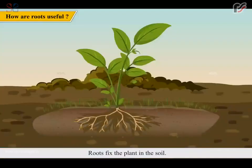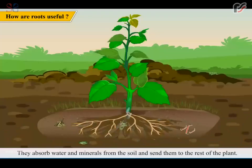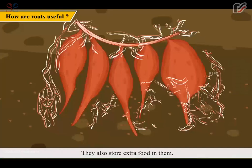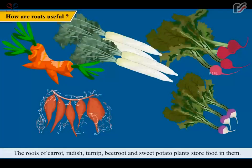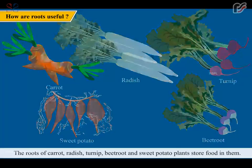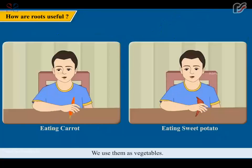Roots fix the plant in the soil. They absorb water and minerals from the soil and send them to the rest of the plant. They also store extra food in them. The roots of carrot, radish, turnip, beetroot and sweet potato plants store food in them. We use them as vegetables.